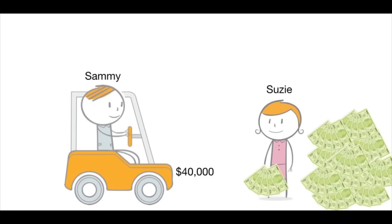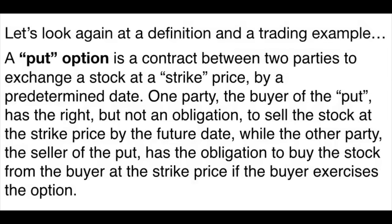Here's a footnote to this story: if Sammy had a poor driving record, that would be more of a risk to Susie, so she would have charged him more than $1,500 for the one-year policy. On the other hand, if Sammy had an exemplary driving record, Susie could have charged him less, as the risk would be lower. Likewise with put options — the higher the perceived risk, the higher the premium demanded by the market.